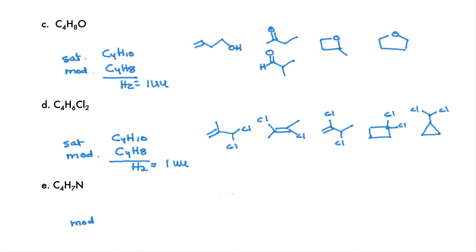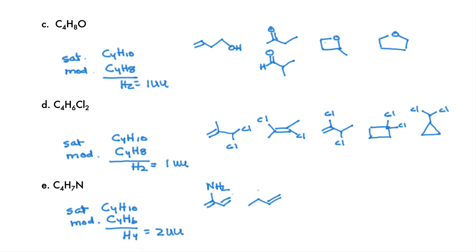In E, ignore the nitrogen and subtract a hydrogen to get the modified formula C4H6, which we subtract from the fully saturated formula. The result is four hydrogens missing and two units of unsaturation. We can have both units of unsaturation be carbon-carbon double bonds with an NH2 coming off of it, or a carbon-nitrogen double bond and a carbon-carbon double bond, or a triple bond. We could also have a five-membered ring including the nitrogen in the ring with a double bond, and finally two rings connected — a four-membered ring connected to a three-membered ring.